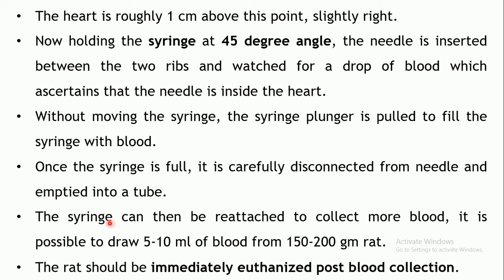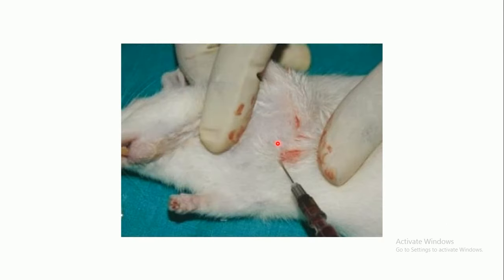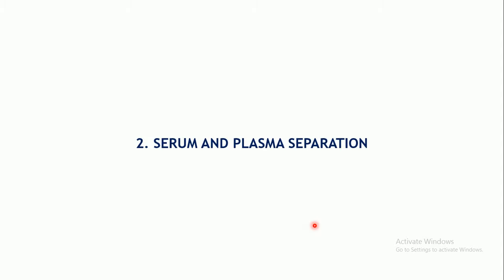Once the syringe is full, disconnect the needle — keeping it in place in the heart — empty the syringe into a tube, and reattach for more collection. This way, 5 to 10 ml of blood can be collected from a 150–200 gram rat. After blood collection, the animal must be immediately euthanized and should not be allowed to regain consciousness, as this is a terminal blood sample collection technique after which the animal is sacrificed.